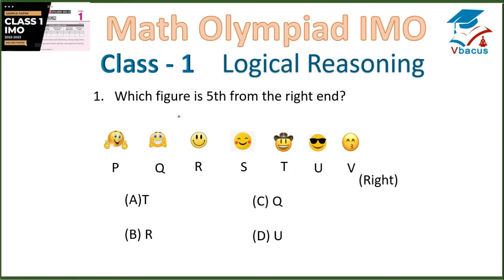Question 1: Which figure is 5th from the right hand? This is your right hand. Start counting: 1st, 2nd, 3rd, 4th, 5th. So this is your 5th from the right — R. Your correct option is B, R.